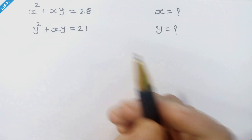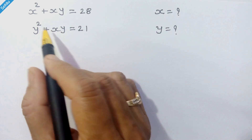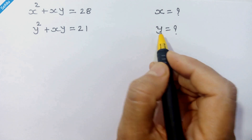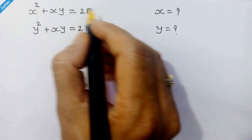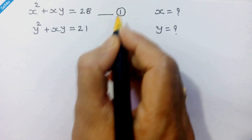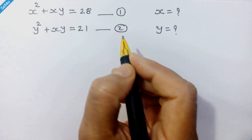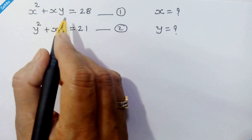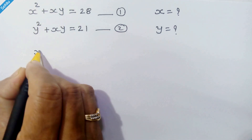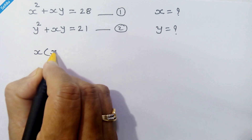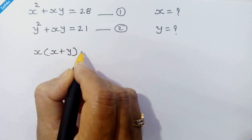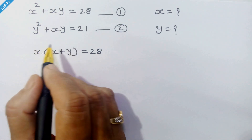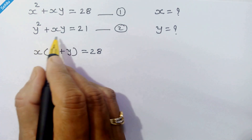Hello friends, here is our system of equations and we will find the values of x and y. Let's call this equation 1 and equation 2. From equation 1, we will take x common, so it will be x times (x plus y) is equal to 28.